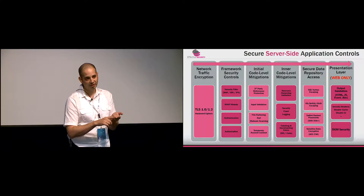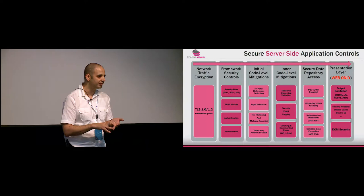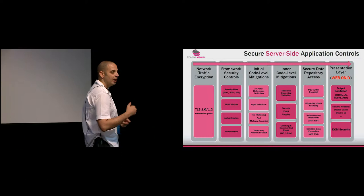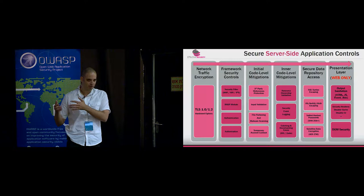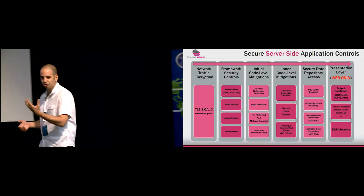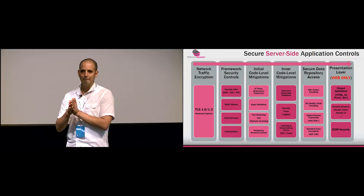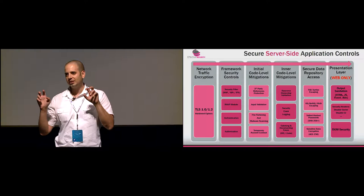Path traversal, RFI, SSRF — these attacks are delivered through input, so we'll validate the input to mitigate them. Forced access attacks abuse the lack of authorization enforcement, so we'll enforce authorization. Parameter-tampering attacks exist because there's too much control given to the client side, so we'll reduce client-side controls. We'll use generic mechanisms that handle the infection vector that the various attack categories are using.